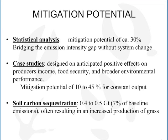We also developed five case studies on specific regions and systems using specific mitigation options. Those options were grouped in packages designed based on anticipated positive effects on emissions, but also on producer income, food security, and broader environmental performance. From these case studies, the mitigation potential was estimated to range from 10% to 45% for a constant level of production — the same output of meat, dairy, or eggs.